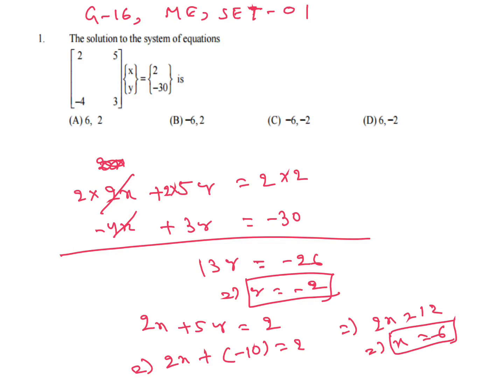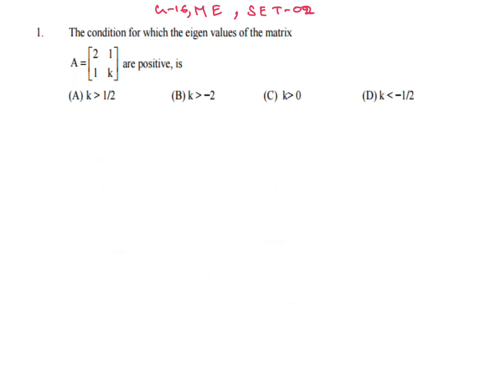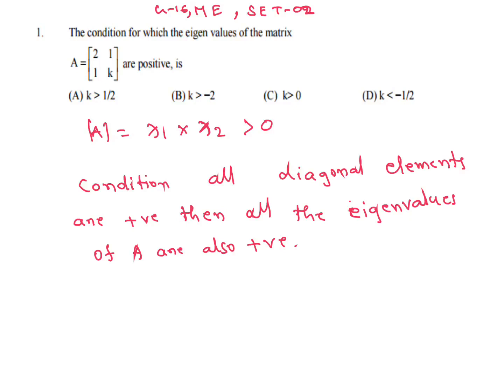Mechanical Set 2: find the condition for which the eigenvalues of the matrix are positive. The product of eigenvalues equals the determinant of the matrix. For both eigenvalues to be positive, the determinant must be greater than 0. The determinant equals 2k − 1, so 2k − 1 > 0, meaning 2k > 1, and k > 1/2. A is our answer.